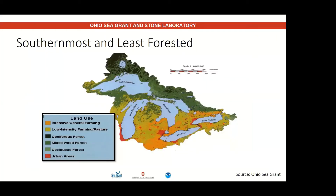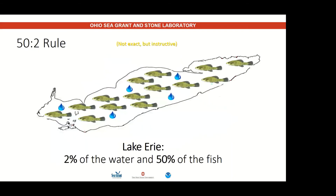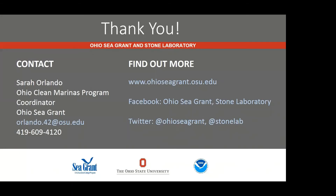Lake Erie is also the southernmost and the least forested of the Great Lakes. All of these factors — being the shallowest, the smallest, and the least forested — play into the Lake Erie ecosystem. While Lake Erie has only about 2% of the water of all the Great Lakes, we have about 50% of the biomass, or the living organisms inhabiting the entire Great Lakes ecosystem. This means that there are more fish in Lake Erie than all the other Great Lakes combined. The next videos will go more in-depth on the physical and biological processes in the Lake Erie ecosystem.